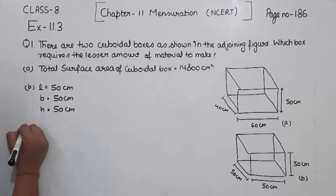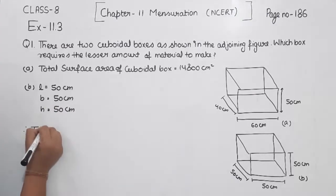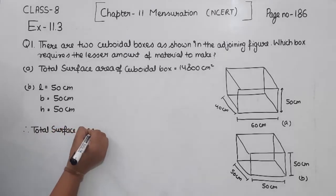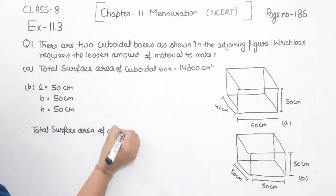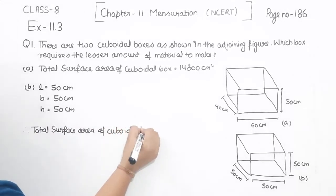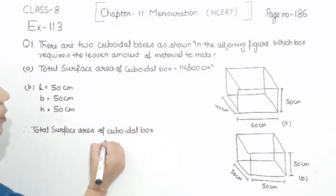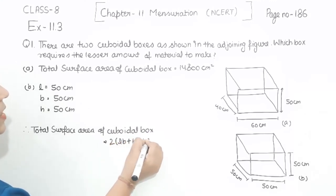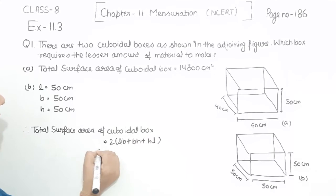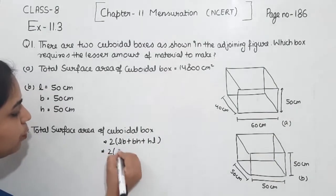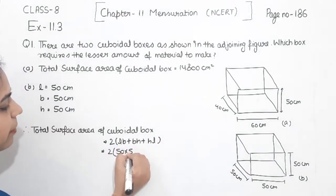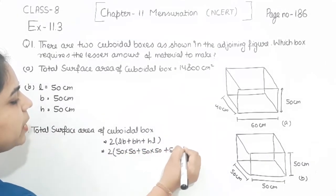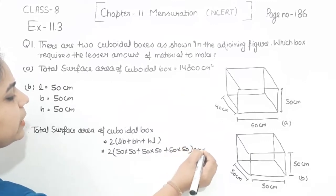Now we have to find the total surface area of the second box. Using the same formula: 2 × (L×B + B×H + H×L). Substituting: 2 × (50×50 + 50×50 + 50×50) centimetres squared.